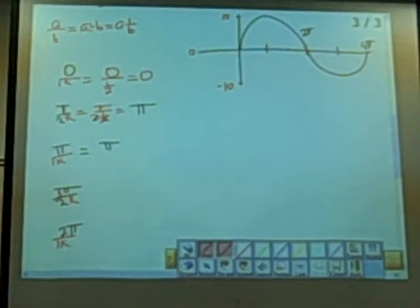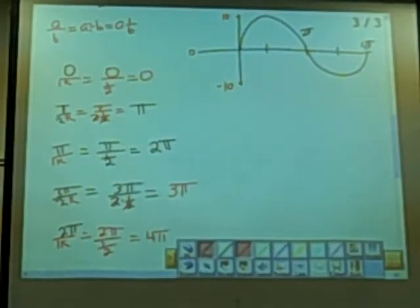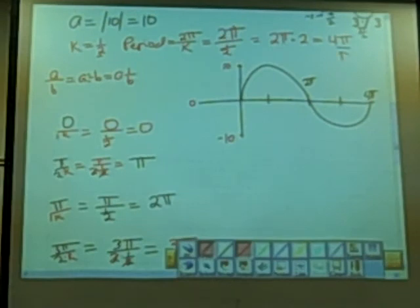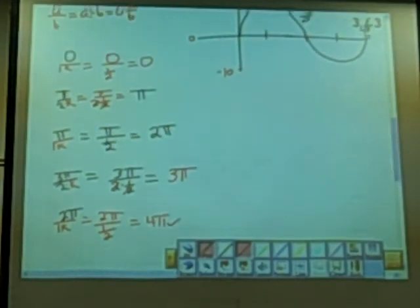Now here, we have pi over k, which was 1 half. So we flip and multiply the denominator, and we get 2 pi. And k was 1 half, so this is 3 pi over 2 times 1 half. So now the two's cancel right here, and we end up with 3 pi. And then this would be 2 pi over 1 half, and we would flip and multiply, and we get 4 pi, which is what we calculated up here. So it checks. And so this confirms what we originally knew was our period.